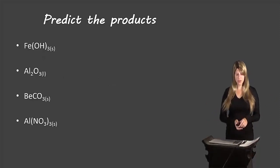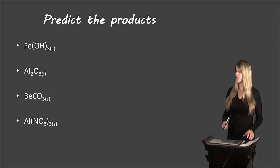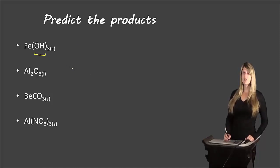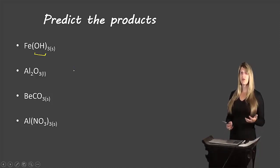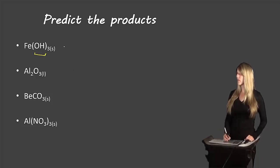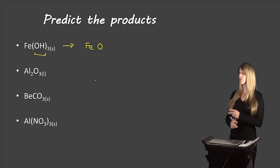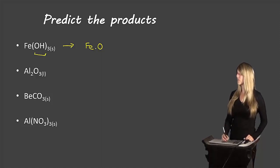Let's look at how we predict reactions for these types. The first example is iron hydroxide. We're dealing with the decomposition of a hydroxide, and we know the rule is that it will decompose into a metal oxide and water. So our product will be iron and oxygen. The most common ion for iron is iron(III), with a 3+ charge, and oxygen has a 2− charge. Crossing over, we get Fe₂O₃ in the solid state.